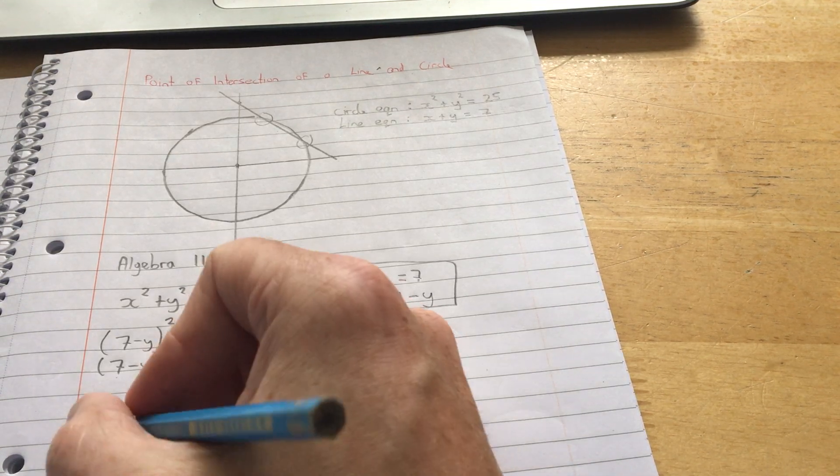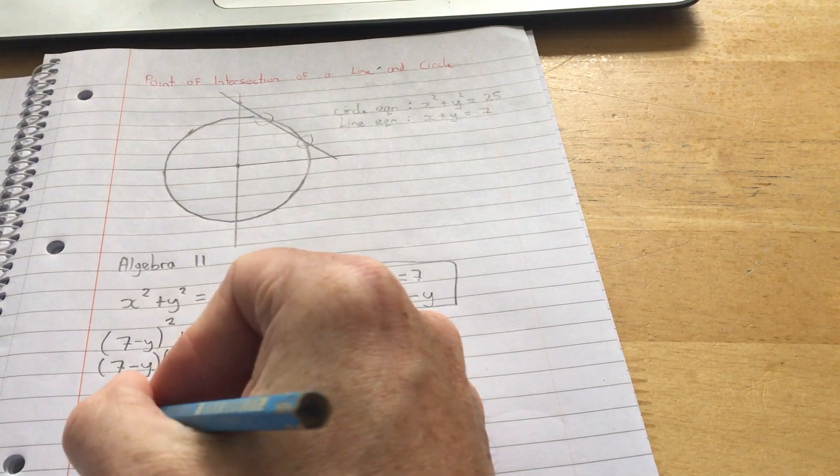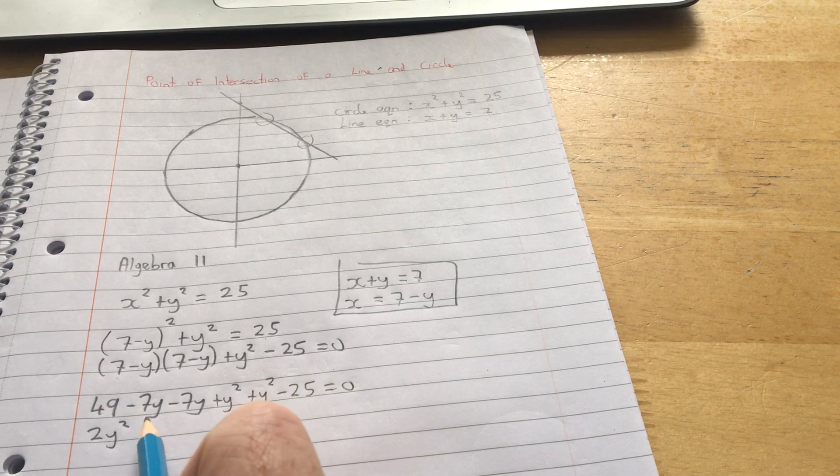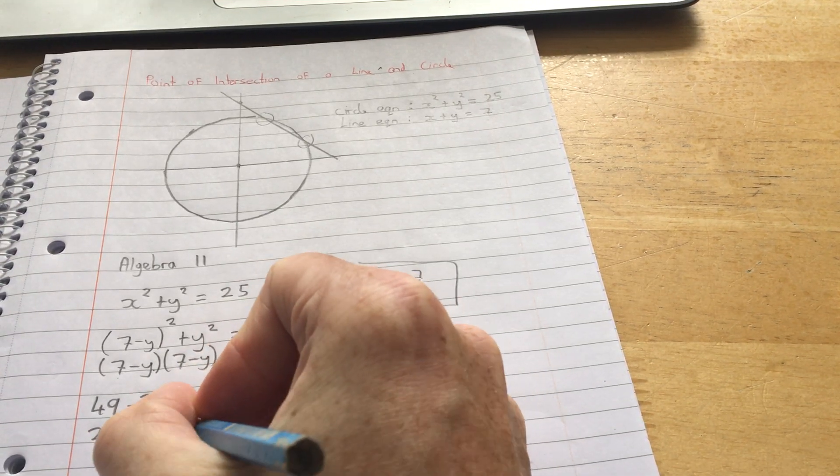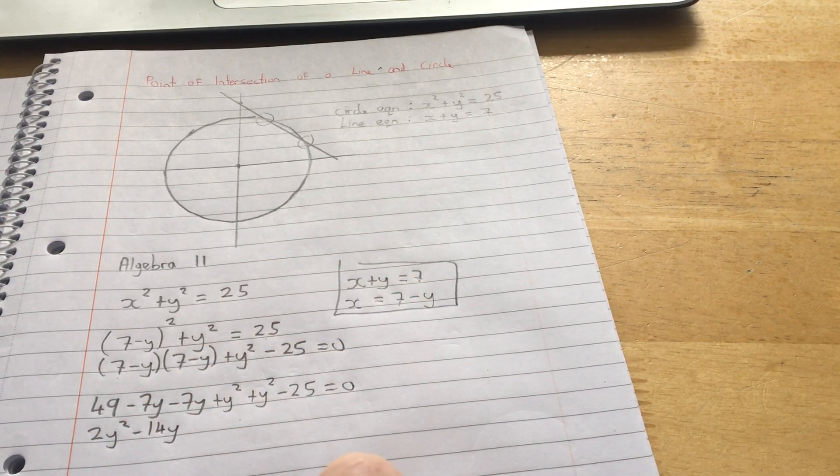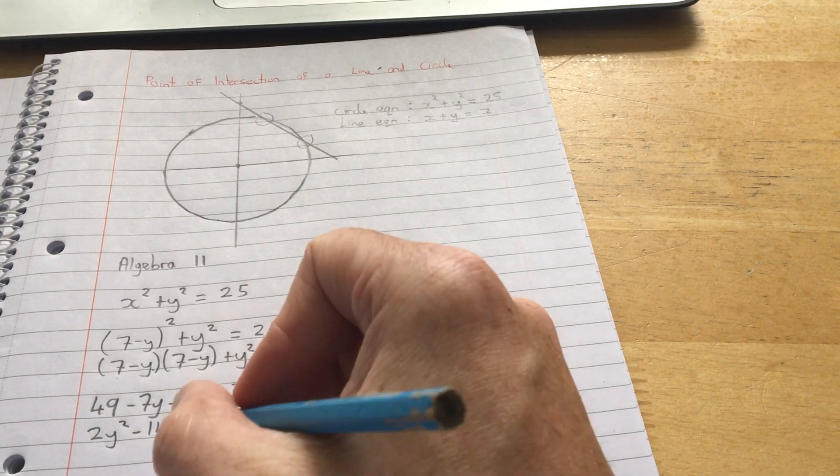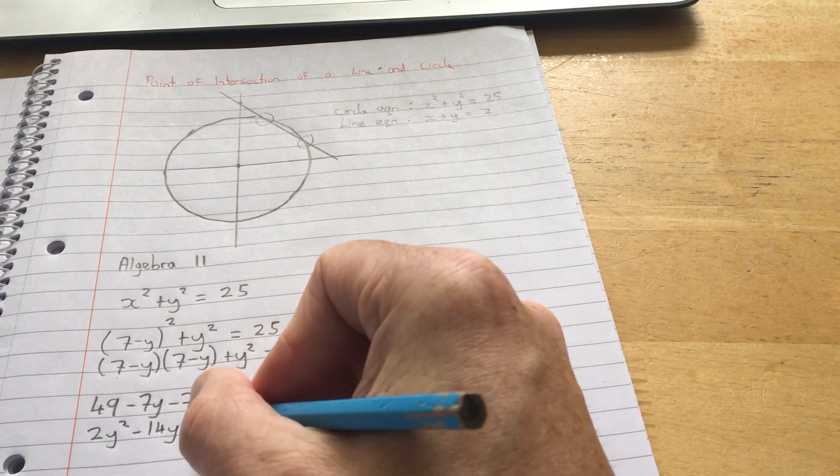y squared and y squared gives me 2y squared. Minus 7y minus 7y gives me minus 14y. And 49 take away 25 is plus 24.